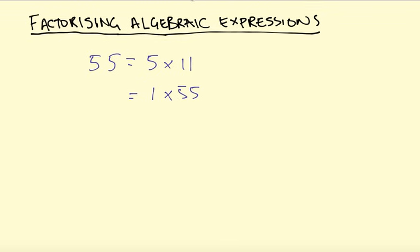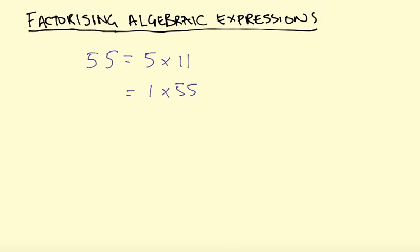You can also factorise algebraic terms, so if you have 3x, well, factors of 3x are 3 and x, so 3 times x. So that's factorising numbers and terms. And then if you have an expression, you need to take out the highest common factor. So let's have a look at an example.